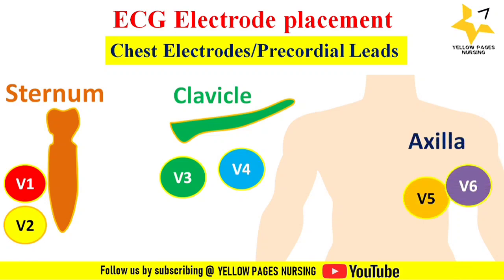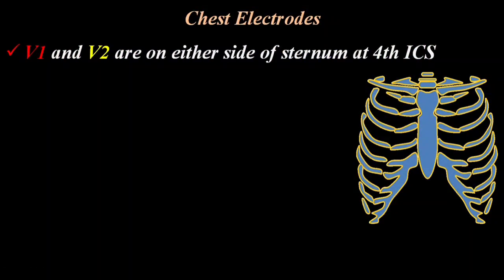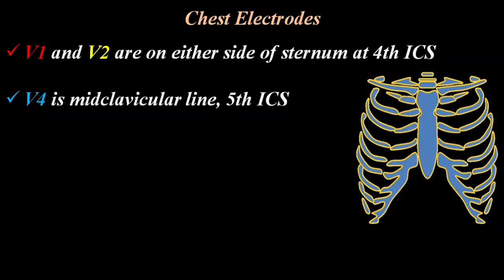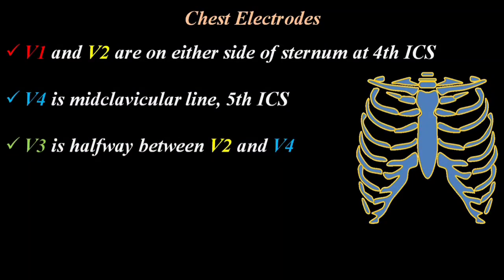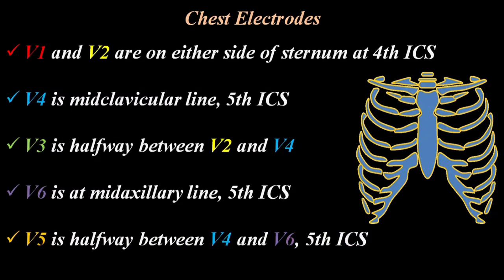V1 and V2 are placed on either side of the sternum at the fourth intercostal space — V1 on the right side and V2 on the left. V4 is at the mid-clavicular line on the fifth intercostal space. V3 is halfway between V2 and V4. V6 is at the mid-axillary line on the fifth intercostal space, and V5 is halfway between V4 and V6 on the fifth intercostal space.